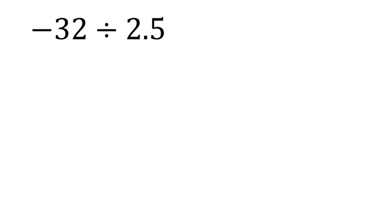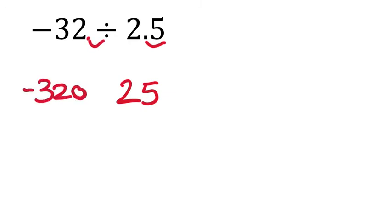Let's divide negative 32 by 2.5. As a memory jog: we don't want decimals in the divisor, so move the decimal one place right to make it 25, and do the same to negative 32 to make it negative 320. Since I know the answer is negative, I'll divide 320 by 25. That's easier to work with.